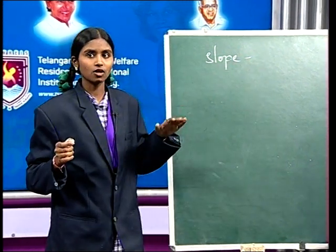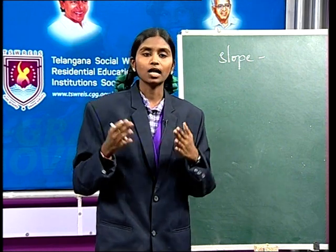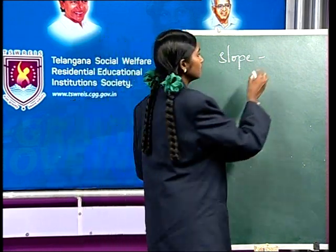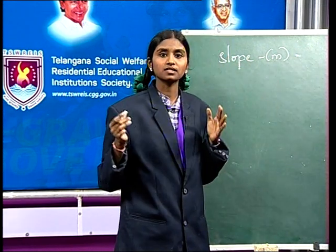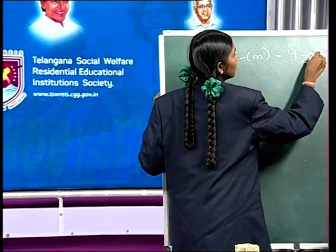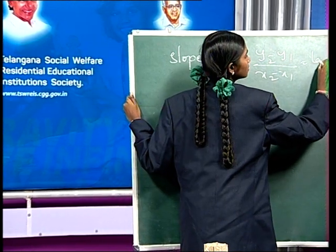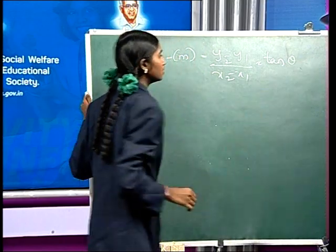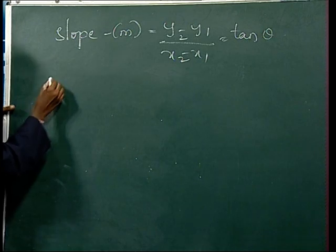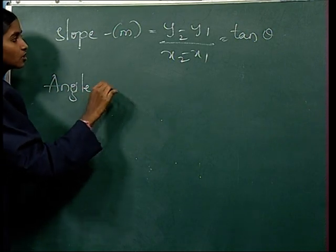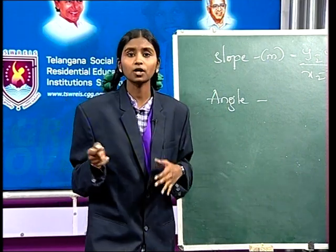Slope is nothing but it tells how steep a line is, or how much y increases as x increases. Slope is denoted by the letter m, and m is equal to change in y-axis by change in x-axis — that is y2 minus y1 by x2 minus x1. We can also write slope as tan theta. Slope is constant everywhere on the line. Next, coming to angle — angle is nothing but the amount of turn between two straight lines that have a common endpoint is known as angle.